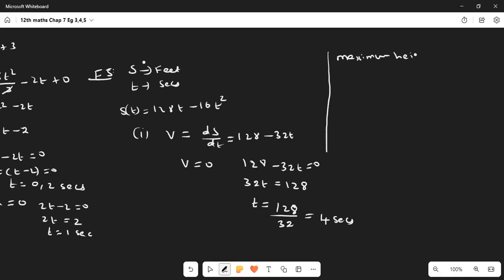Maximum height, s(4) = 128(4) - 16(4²) = 512 - 16(16) = 512 - 256 = 256 feet. Maximum height at 4 seconds is 256 feet.